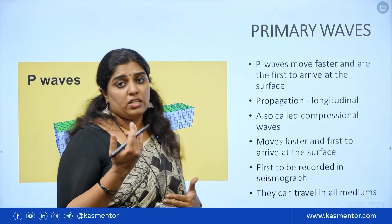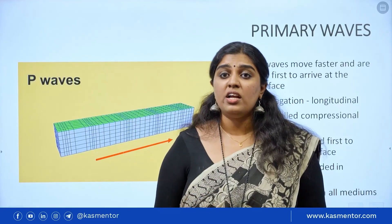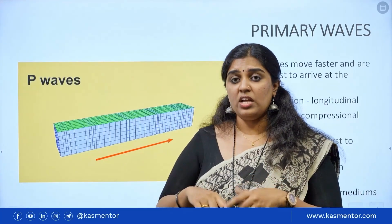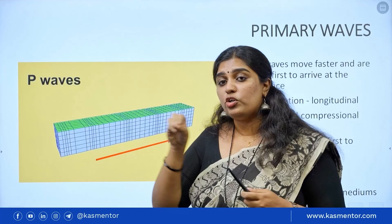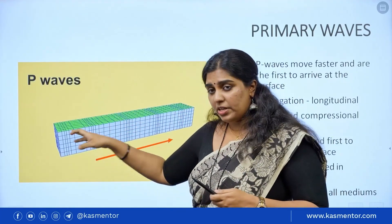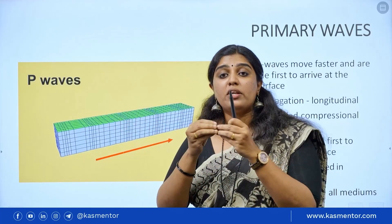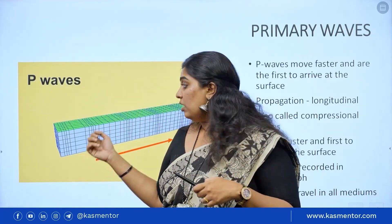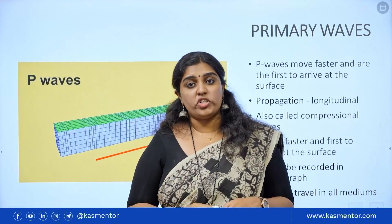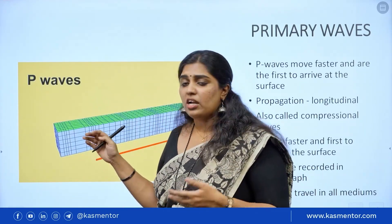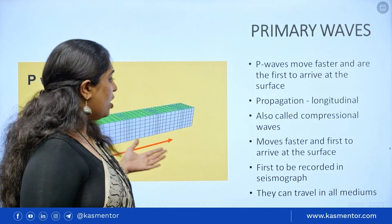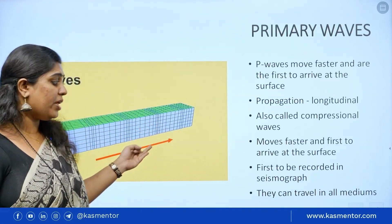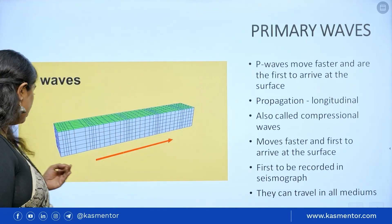The primary wave is the P wave. P waves have a to-and-fro motion. We call it a compressional motion — compressing in the same way as the wave propagates. This is called longitudinal propagation — the wave propagates in the same direction as the particle motion.